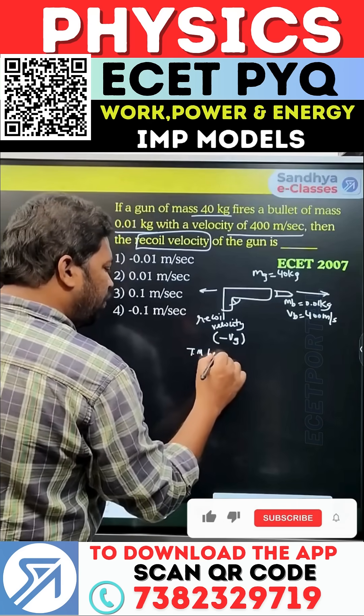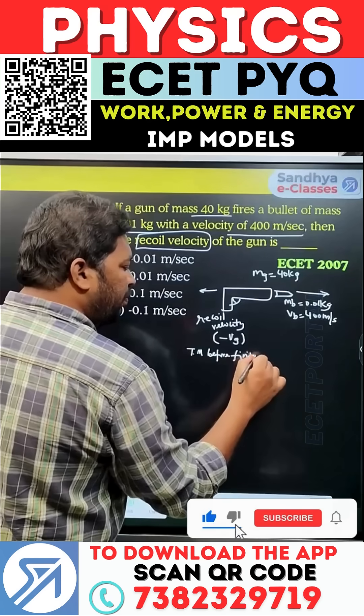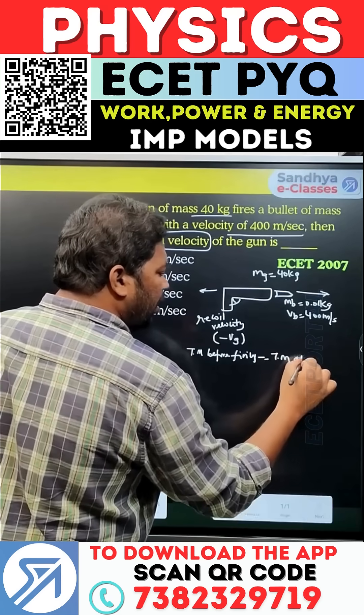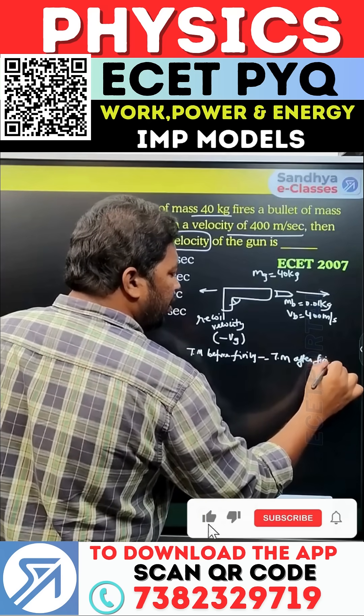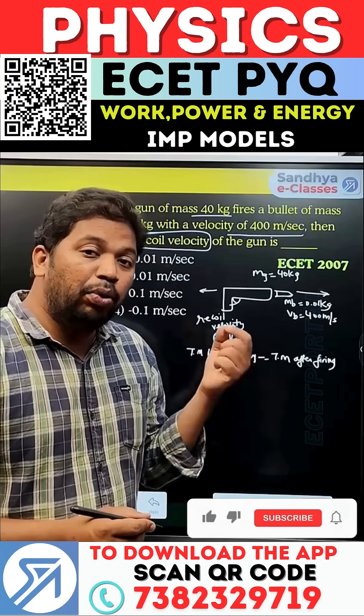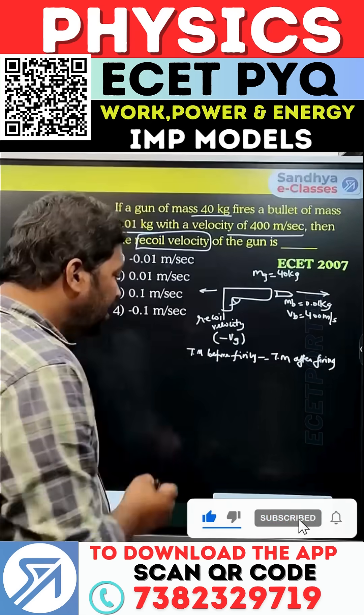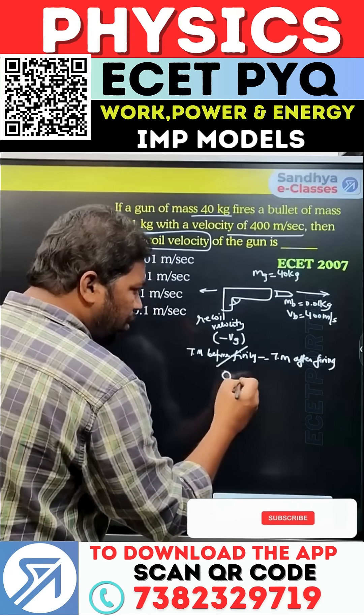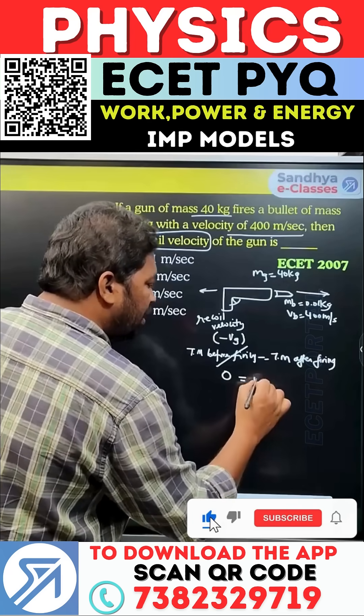According to conservation of momentum, total momentum before firing equals total momentum after firing. Initially, the total momentum is zero, meaning both gun and bullet are at rest. Therefore, zero equals the total momentum after firing.